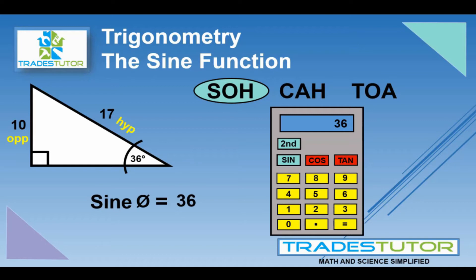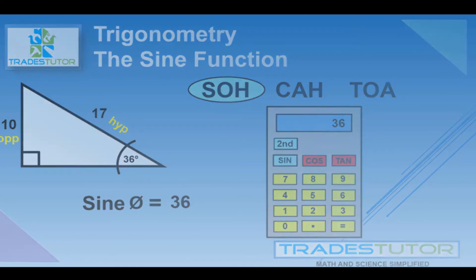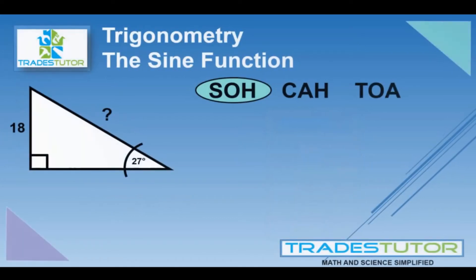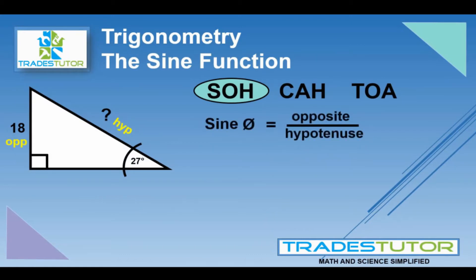Now, what if we had the angle already and we want to find one of the sides? Well, we'll try an example there as well. We're still using the sine function. We have an angle of 27. In this case, the opposite is 18. We'll put those down, the opposite and the hypotenuse. We'll put our formula down.